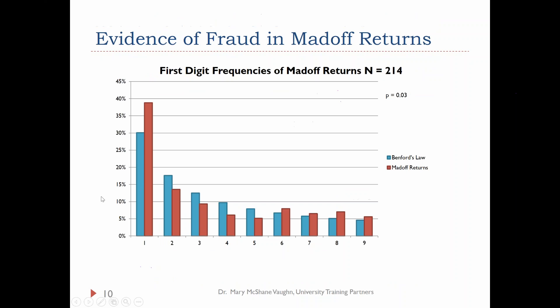Another example is the Bernie Madoff returns, where he was doctoring the books. They looked at 214 records for those returns. It looks like he actually tried to follow Benford's Law, but he had way too many digits that began with 1 — almost 40% — and so the p-value was 0.03.